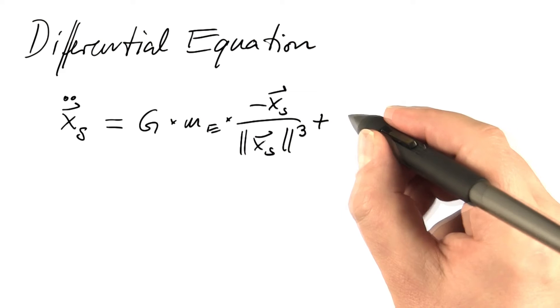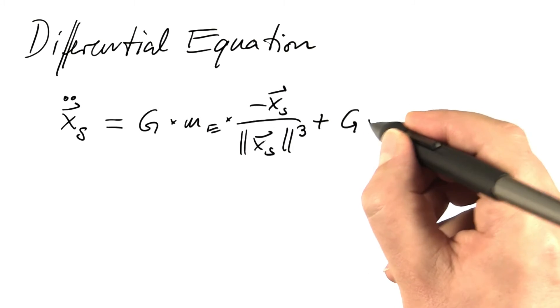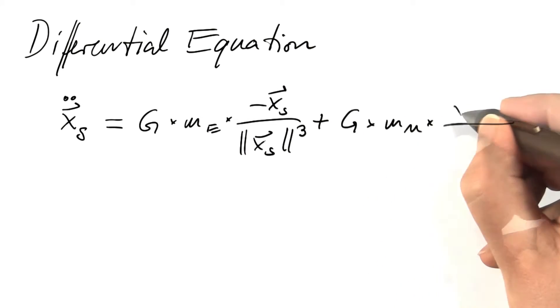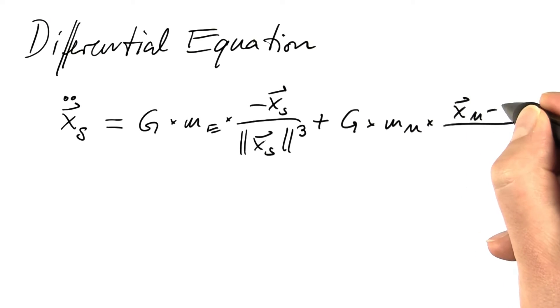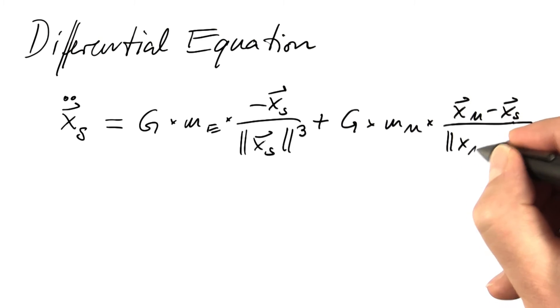Now comes the component due to the Moon: gravitational constant times the mass of the Moon times a vector from the spacecraft to the Moon divided by the third power of its length.